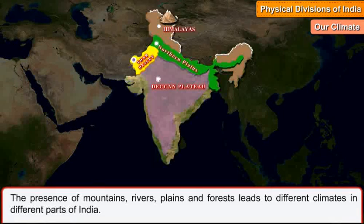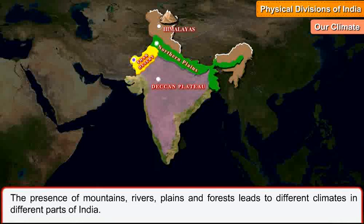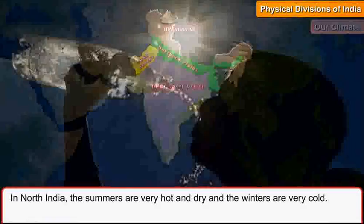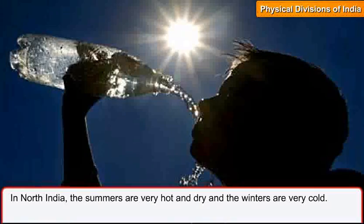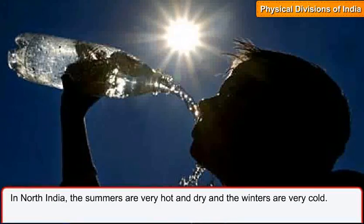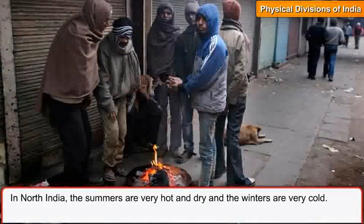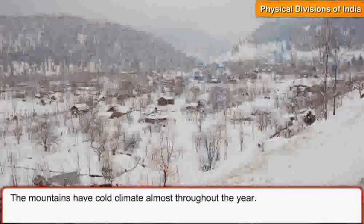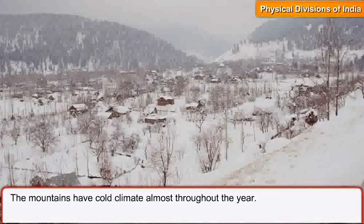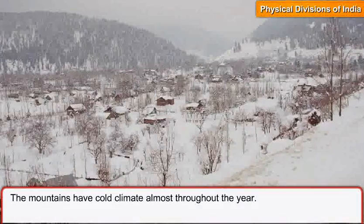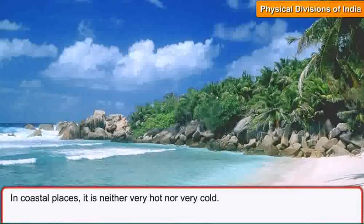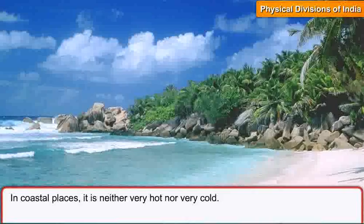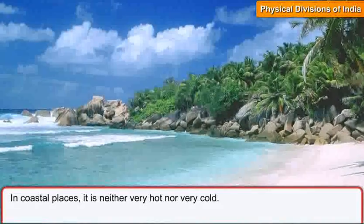Our Climate. The presence of mountains, rivers, plains and forests leads to different climates in different parts of India. In North India, the summers are very hot and dry and the winters are very cold. The mountains have cold climate almost throughout the year. In coastal places, it is neither very hot nor very cold.